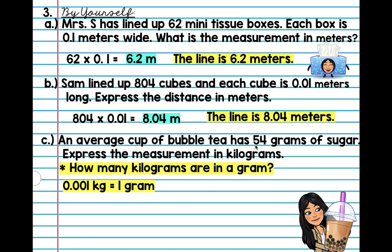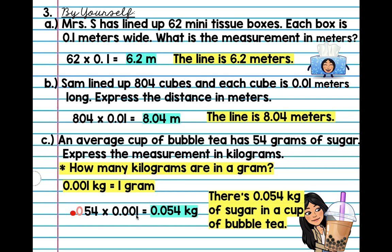Alright, good. You just have to multiply it. So, let's go ahead and do that by yourself. Okay, it's a little tricky. So, be sure you look at your decimal placement. Alright, so I know it's three decimal places. So, I'm going to go 1, 2, 3. Alright, so, the answer is, there is 0.054 kilograms of sugar in a cup of bubble tea. That's about 12.5 teaspoons of sugar. Wow.